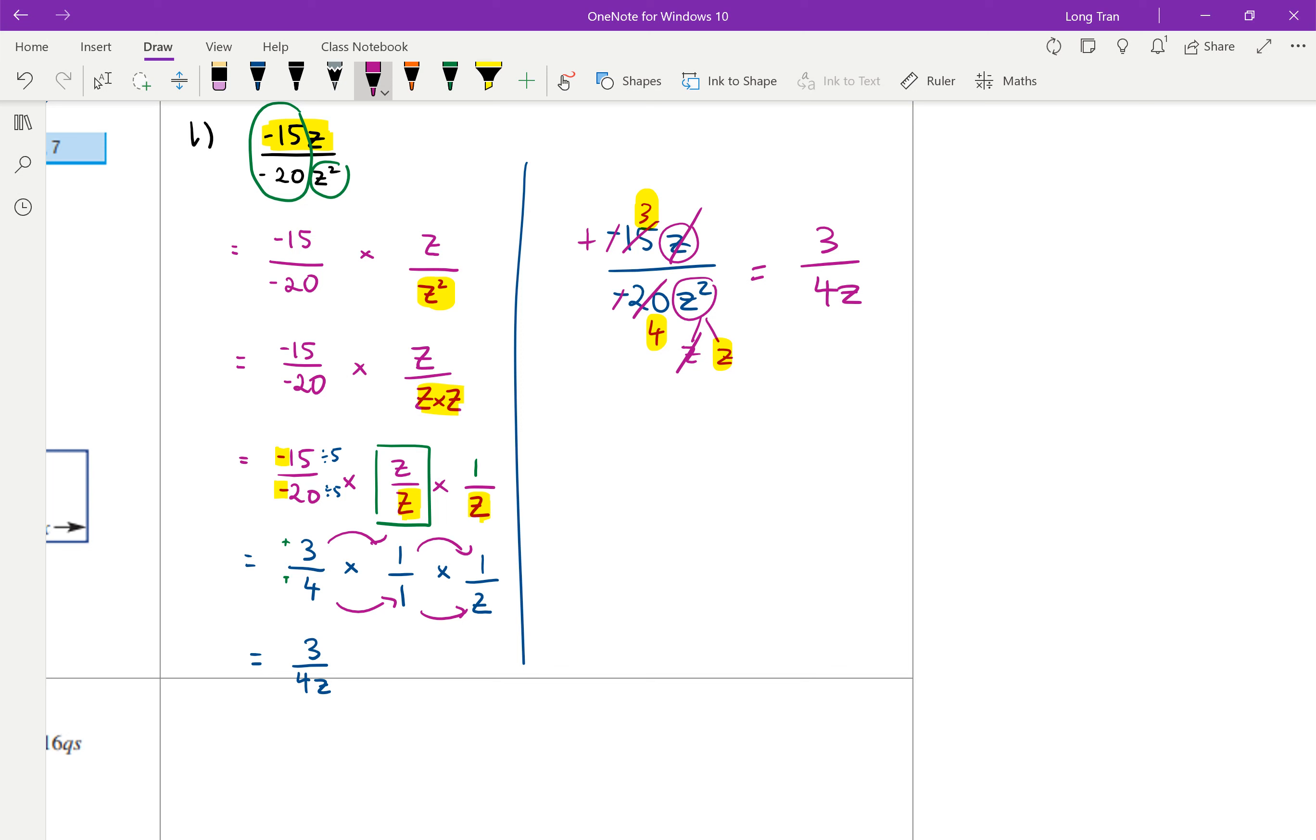And that's, it works, but that's the problem. A lot of students make mistakes later on in senior levels. Say if you had 15 plus z over 20z squared. A lot of students think it's okay to just go 15, cross it out, and then cross off the z. And that's not true. That will make the answer wrong.